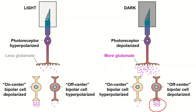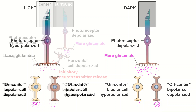The more glutamate that is released onto the corresponding ganglion cell from its bipolar cell, the more action potentials it will fire in response. The opposite responses of the on center and off center bipolar cells is the key to the differential response to light.